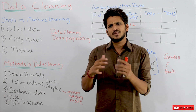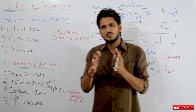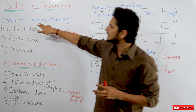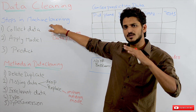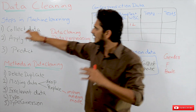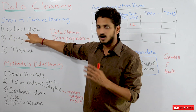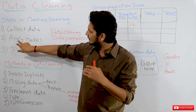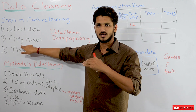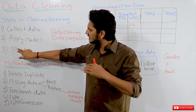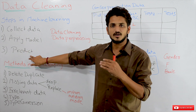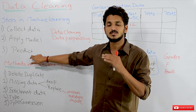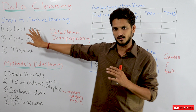In our previous classes, we already discussed about the steps involved in machine learning. What are the steps involved in machine learning? First, collect the data. After collecting the data, we have to apply a model on this data. Then, using this model, we have to predict our future data points. These are the steps involved in machine learning.